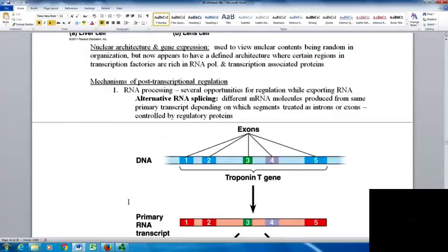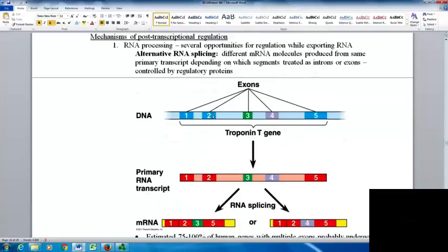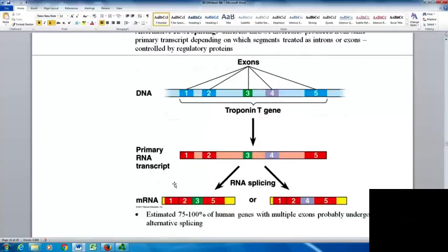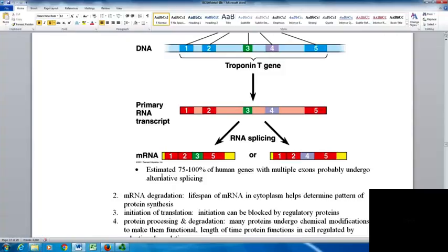Different mRNA molecules can be produced from the same primary transcript depending on which segments you use as introns or exons, controlled by regulatory proteins. For example, you've got exons 1, 2, 3, 4, and 5 in your primary transcript. With alternative splicing, one option is to have 1, 2, 3, 5; another option is 1, 2, 4, 5. You can get multiple combinations from one DNA or primary transcript. It's estimated that 75 to 100% of human genes with multiple exons undergo alternative splicing. This is why humans don't have as many genes as we thought—our original estimate was 100,000 genes, but now we estimate about 10,000 genes.